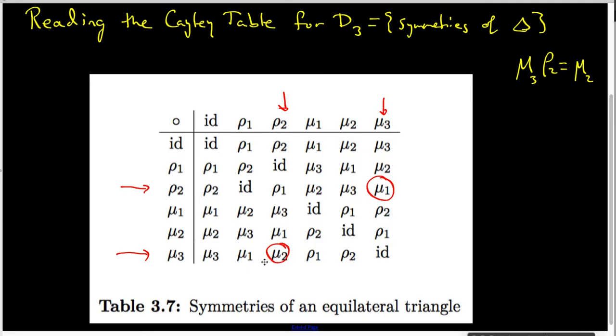And I want to notice that first of all, these two entries say something very important. First do row two and then do mu three, and first do mu three and then do row two cannot be equal to each other because these two entries in this Cayley table are not the same.